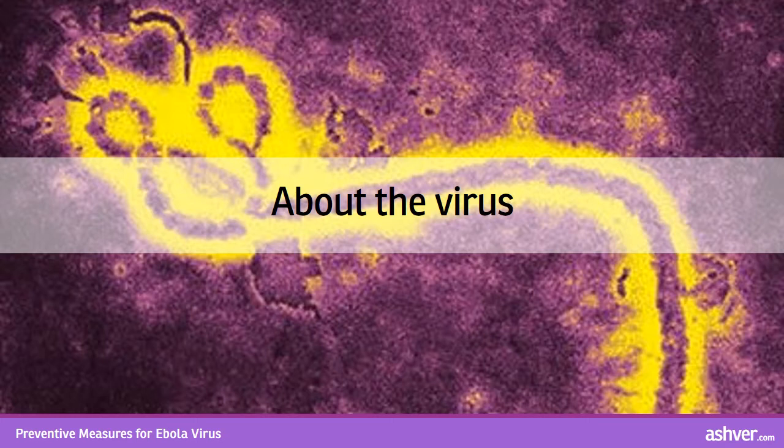Structurally, the virus appears as an 800 nanometer elongated filamentous particle with surface projections or peplomers. Every single virus particle or virion contains a copy of linear, negative-sense, single-stranded RNA with a helical nucleocapsid and a lipid envelope derived from the host cell plasma membrane.